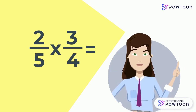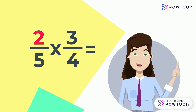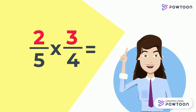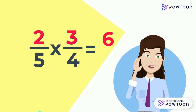When multiplying fractions, you will first multiply the two numerators — 2 times 3, in this case — and that's 6. And then, you'll multiply the two denominators: 5 times 4, in this case.